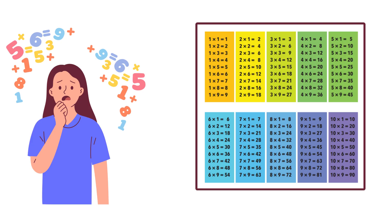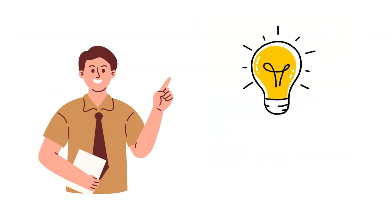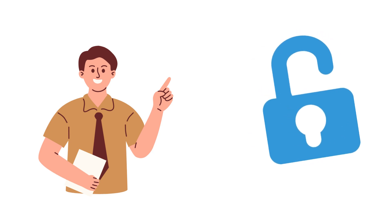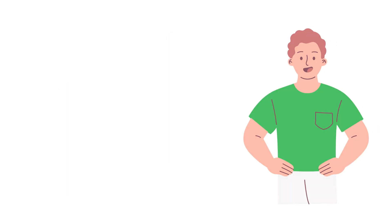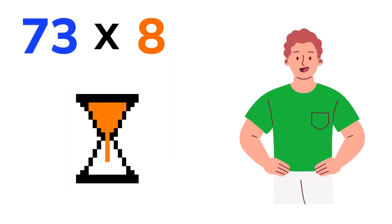There has to be a better way, right? Well, there is. And today we're unlocking that secret. If you just remember tables till 9, you can multiply numbers like 73 times 8 in seconds, mentally.